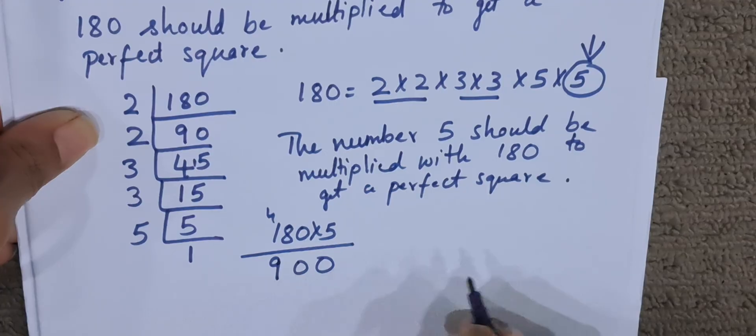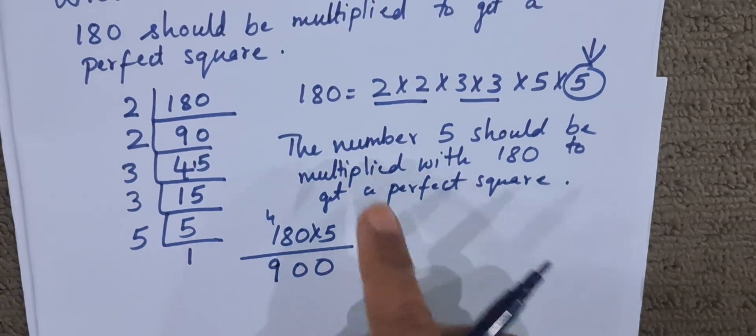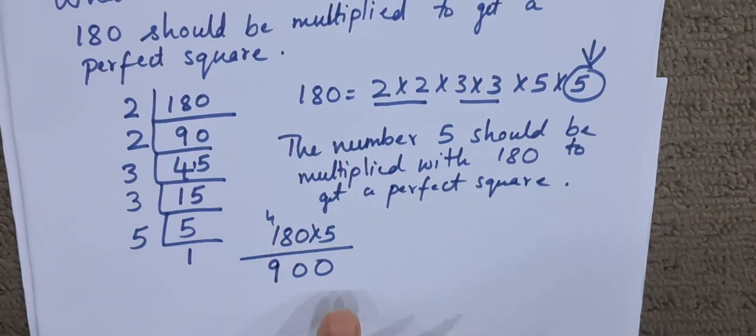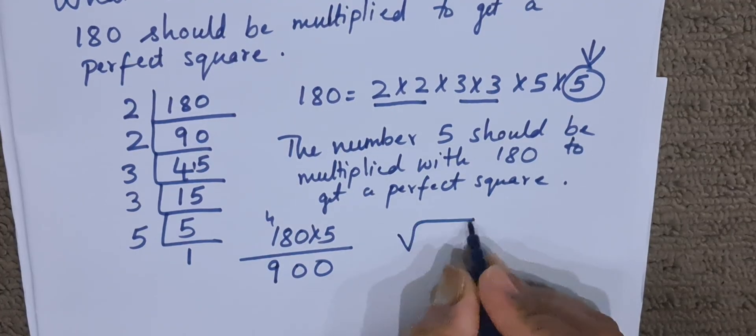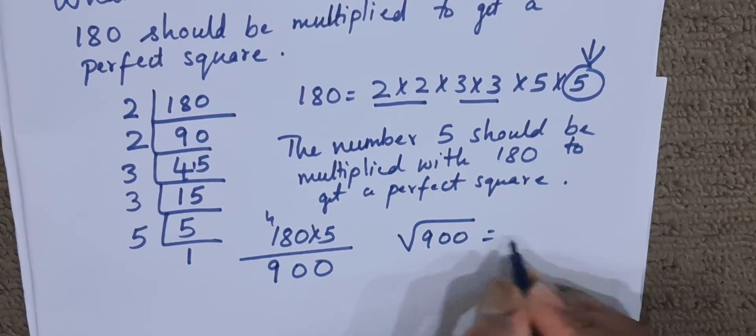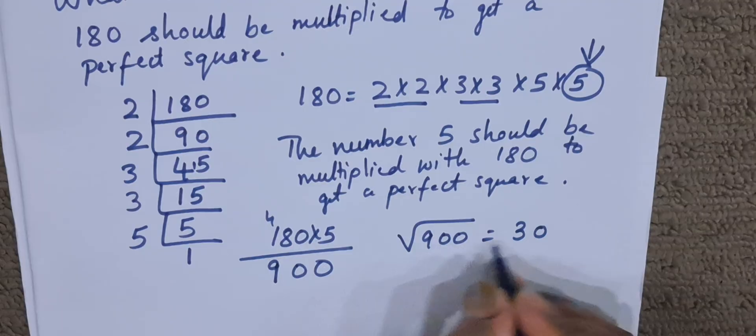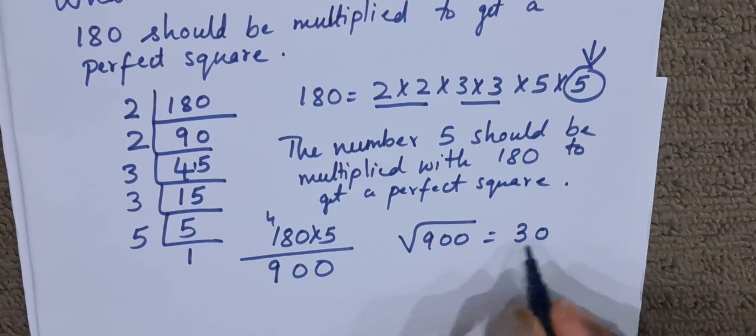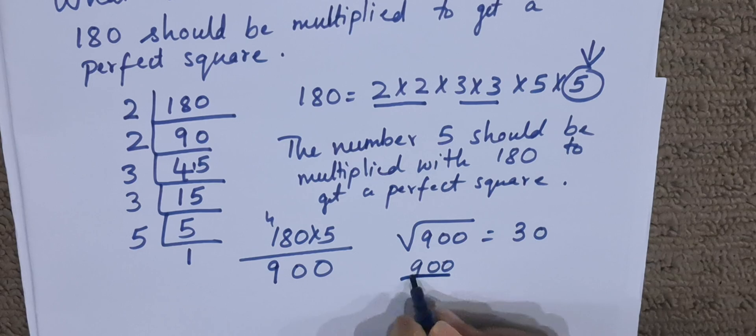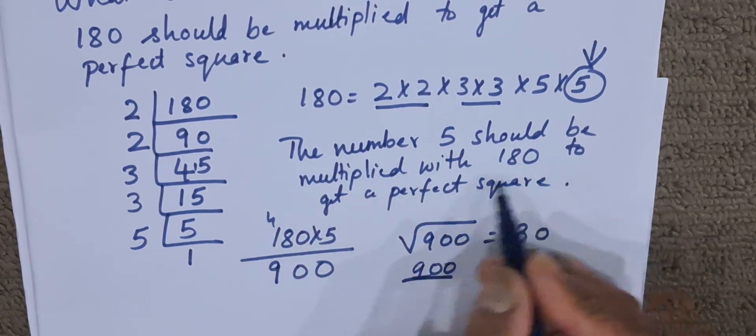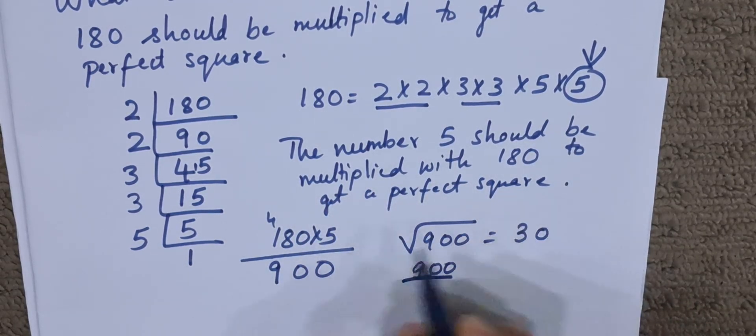So when we multiply 180 with 5, it becomes 900. And what is the square root of 900? We all know the square root of 900 is 30. So it is a perfect square. 900 is a perfect square number, right? So the number 5 should be multiplied with 180 to get a perfect square.